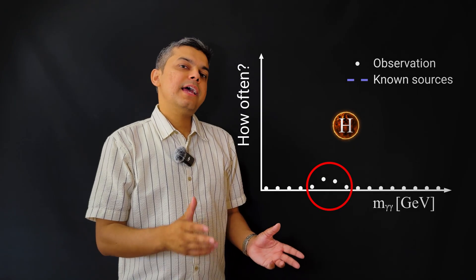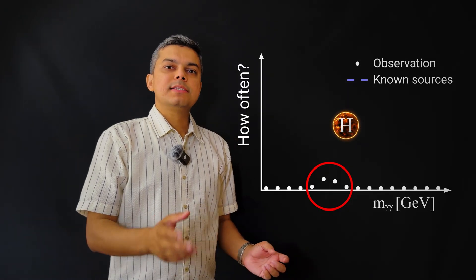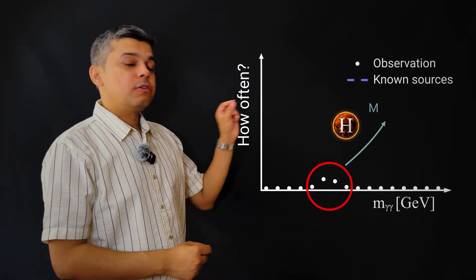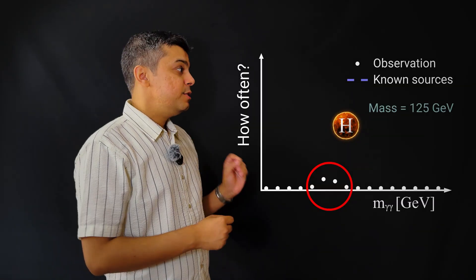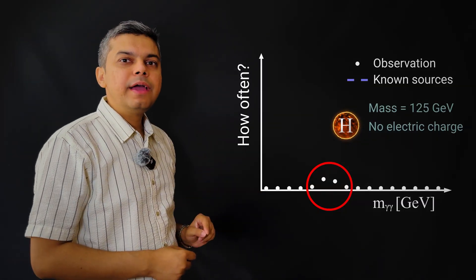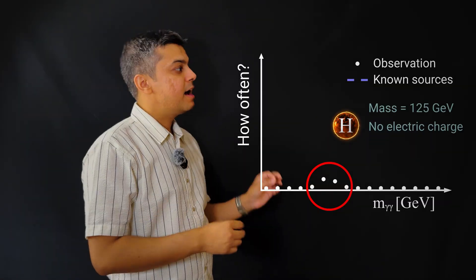Some of the properties are evident immediately. For example, we can calculate the mass of the Higgs boson, we can deduce that it has no electric charge, and we soon confirmed that it has no spin.